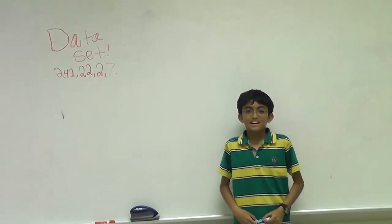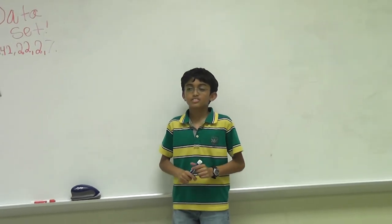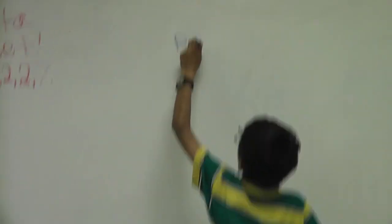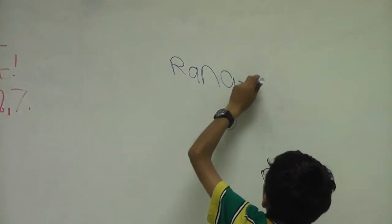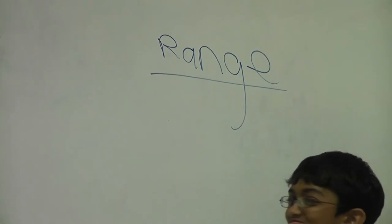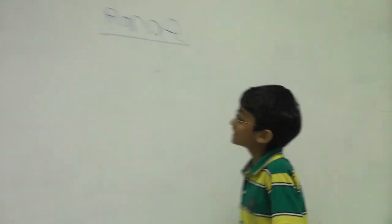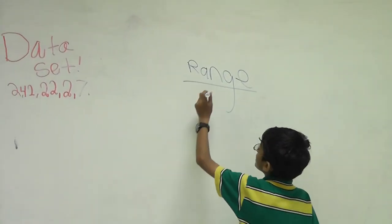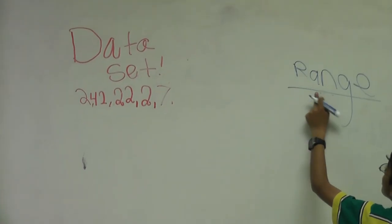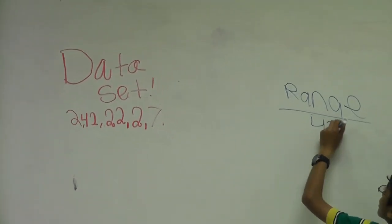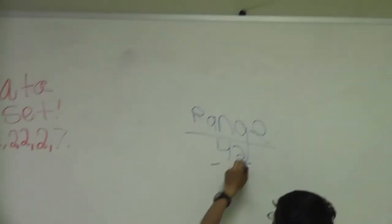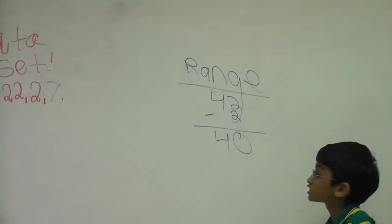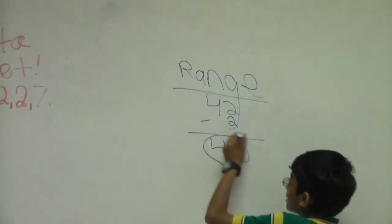Hi, I'm Pratham, and I'm going to teach you what range and mode are. First of all, we're going to do range. Range is always the biggest number minus the smallest number. So for us, it'd be 42 minus our smallest number, which is 2. So it would be 42, so it would be 40. So our range is 40.